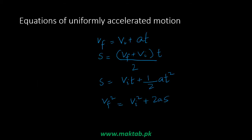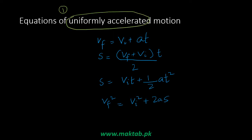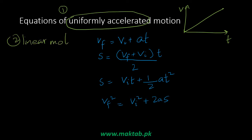You see 4 equations of motion on the screen. These are used to describe a particular motion. There are two conditions: first, the motion must be uniformly accelerated — if we look at the velocity-time graph, the acceleration is a straight line. Second, the motion must be linear. Linear motion is one-dimensional, meaning our velocity, displacement, and acceleration are all in one direction. When this happens, we can treat them as scalars.